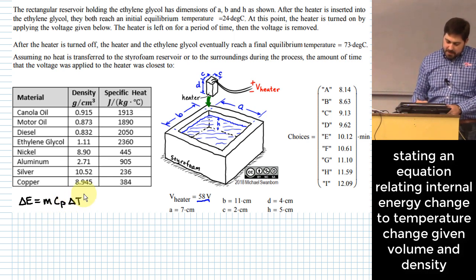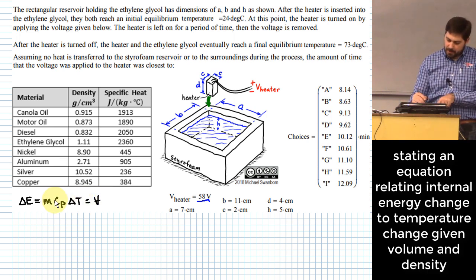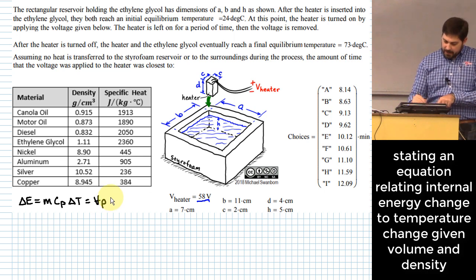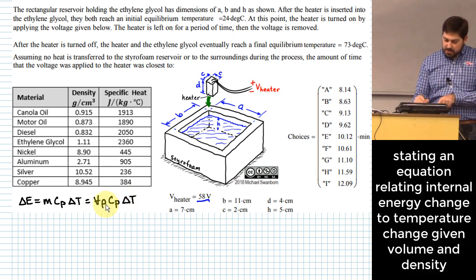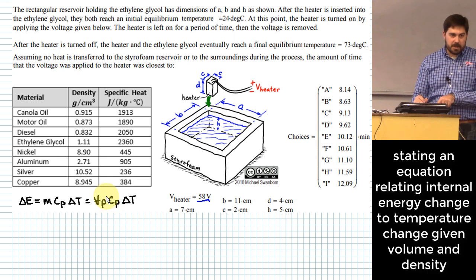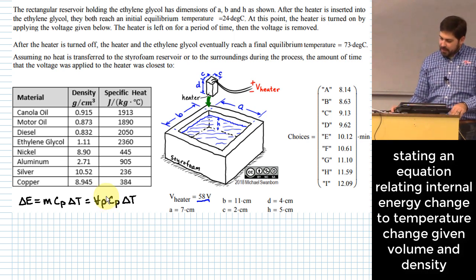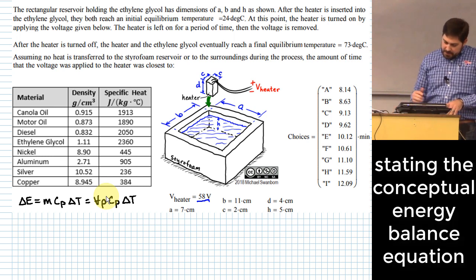But you can express mass another way. How can you express mass? Volume times density, which a lot of times I'll use the Greek letter rho to talk about density, times C sub P times delta T. So if we can come up with expressions of volume and expressions of density, then we can just put all of this into one big expression and we don't need to do a bunch of extra steps.